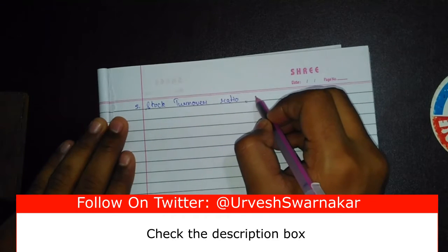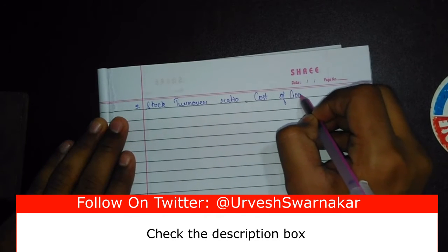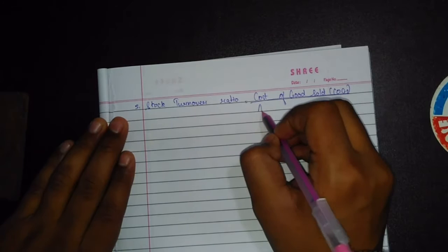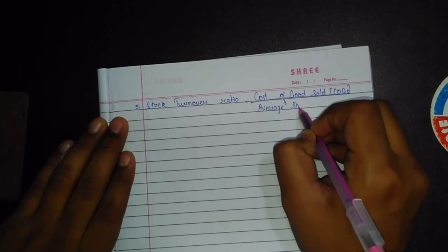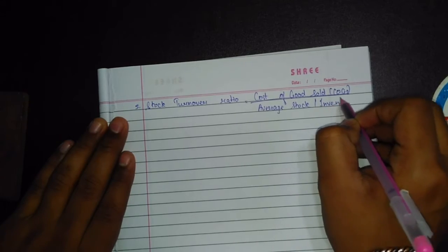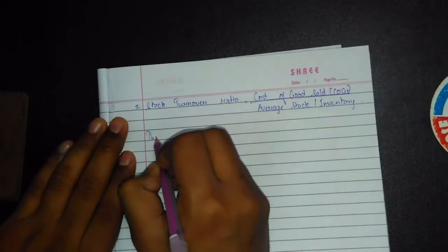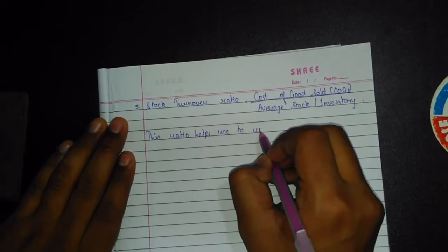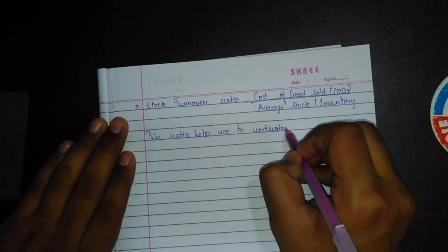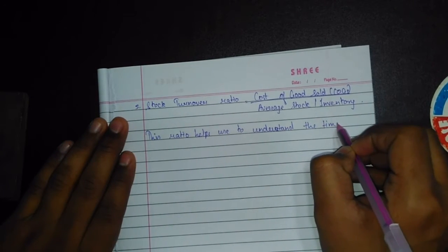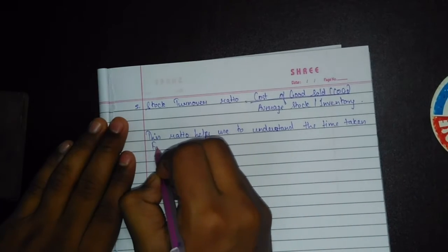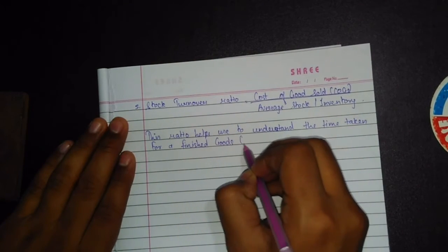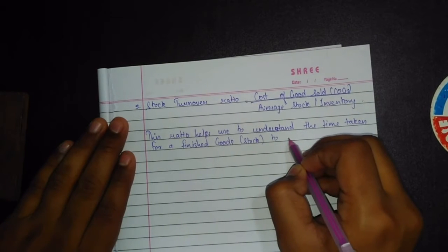The formula for stock turnover ratio is cost of goods sold — that is COGS divided by average stock or inventory. This ratio helps us to understand the time taken for finished goods stock to get sold.